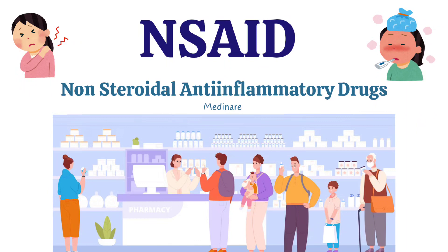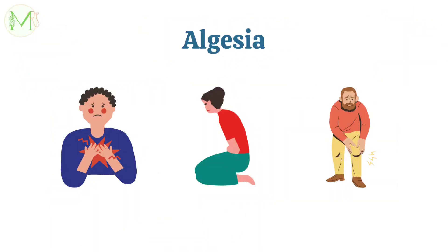Before getting to know about them, we need to get familiarized with certain terms. We all know pain and experience it every day in one form or another. It has a fancier medical term called Algesia, which is defined as an ill-defined unpleasant sensation usually evoked by an external or internal noxious stimulus. Drugs given for Algesia are termed analgesics. They selectively relieve pain by acting in the central nervous system or on peripheral pain mechanisms without significantly altering consciousness. Analgesics relieve pain as a symptom without affecting its cause.